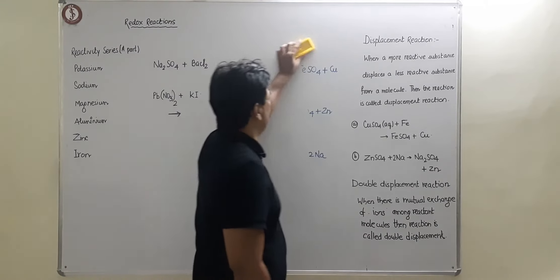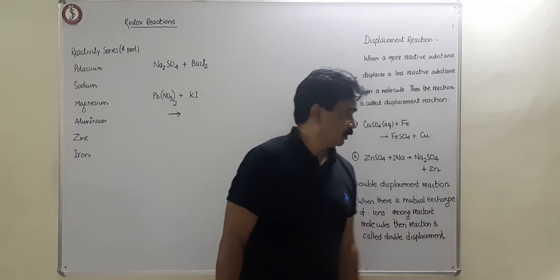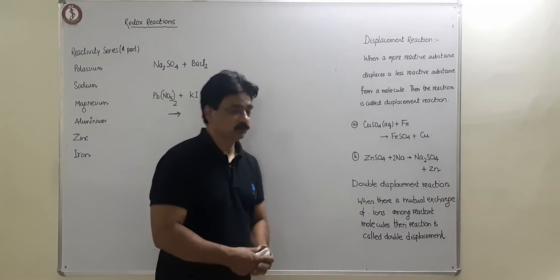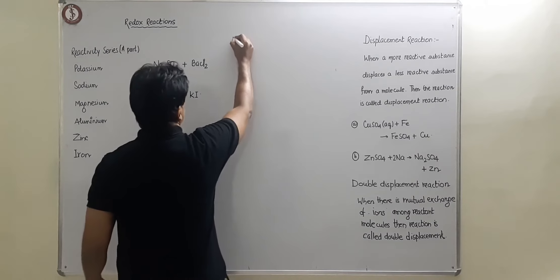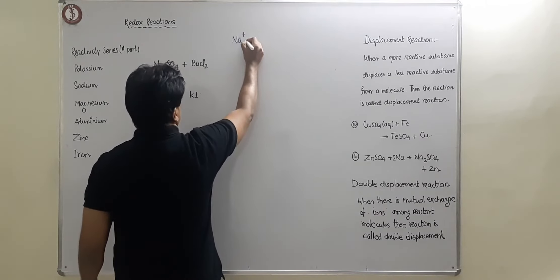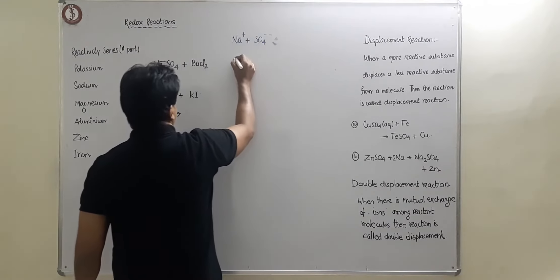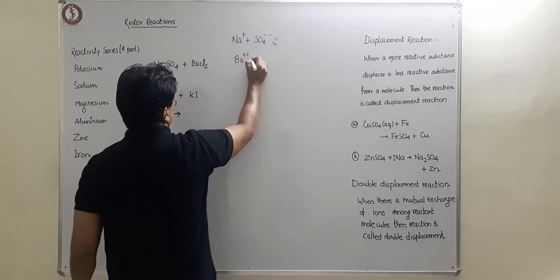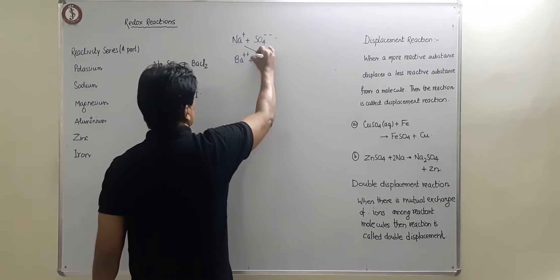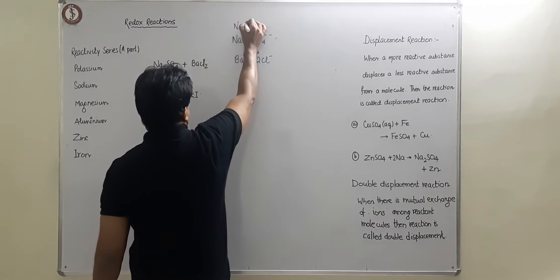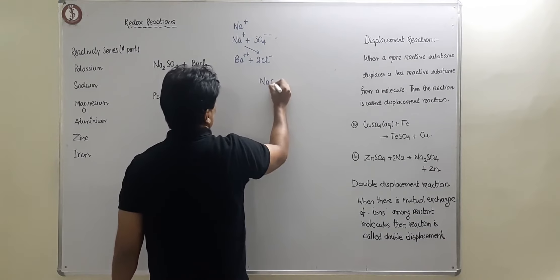Next part is double displacement reaction. So see Na2SO4 and BaCl2 are there. If I break this down, then actually it is in form of Na+ plus sulfate 2- plus barium chloride Ba2+ plus 2Cl-. Actually ion exchange will take place. Na will come like this. Now there are 2Na, so NaCl will be formed.